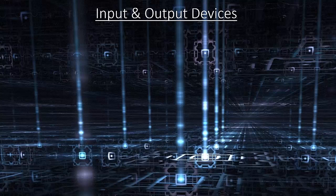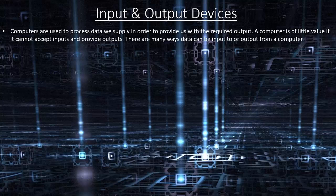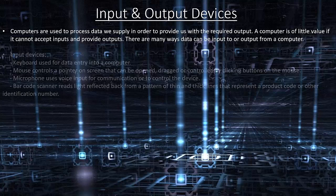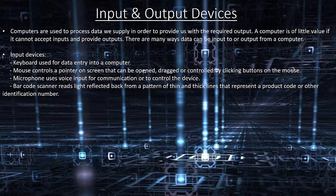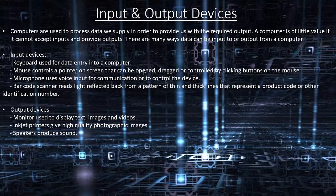Input and output devices. Computers are used to process data in order to provide us with a required output. A computer is of little value if it cannot accept inputs and provide outputs. There are many ways data can be input to or output from a computer. Input devices include keyboards, mouse controllers, microphones and barcode scanners. Output devices include monitors, inkjet printers and speakers.